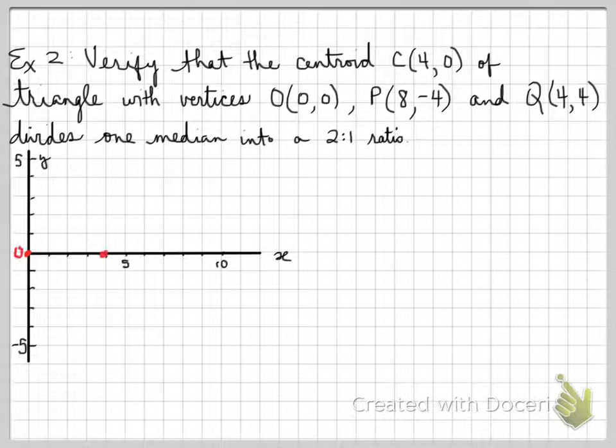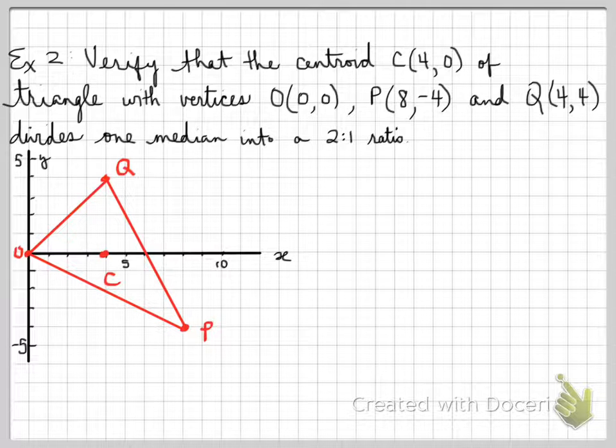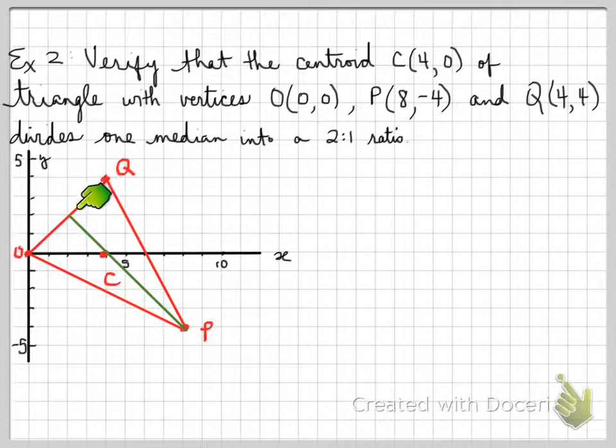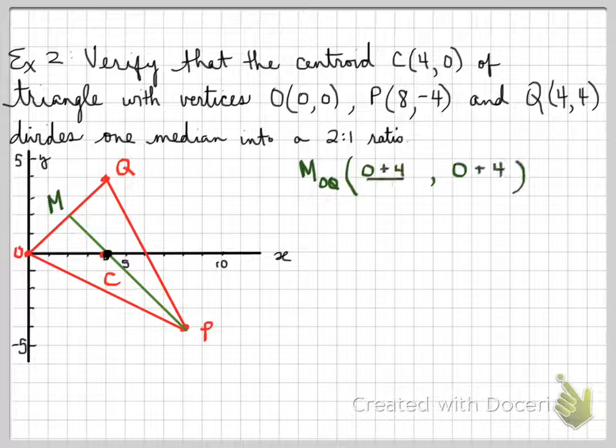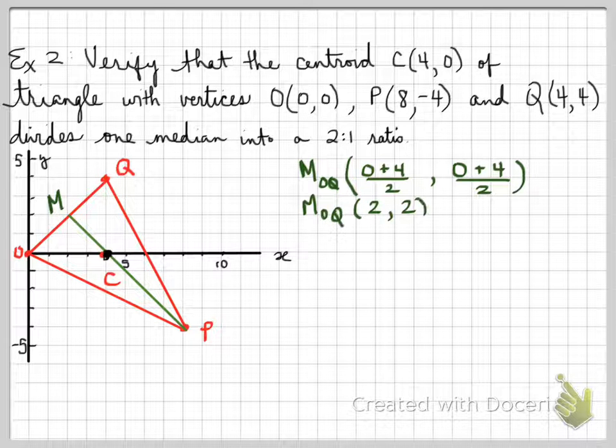So we have coordinates. We want to graph this, O, P, Q. And we want to find the median. Median goes from the vertex to the midpoint of the opposite side. Let's find it for the median of OQ. So it cuts at the midpoint and goes through the vertex. The midpoint is approximately over here. We need to verify that. You can't use this as an approximation. You need to prove to me geometrically that that definitely is the midpoint. So the midpoint of OQ is 0 plus 4 divided by 2, and 0 plus 4 divided by 2.